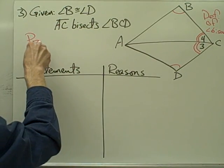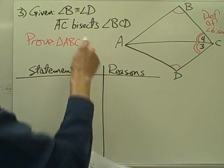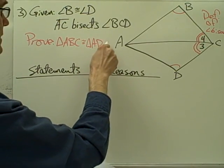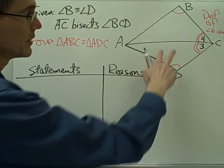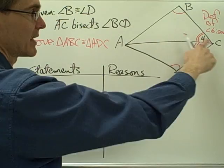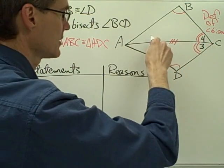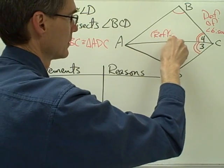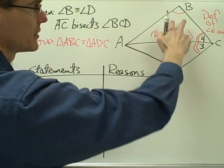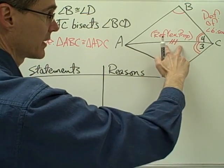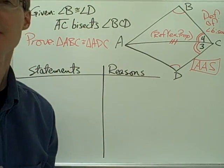This is supposed to say: prove triangle ABC is congruent to triangle ADC. I've got this angle congruent to this angle, and this angle congruent to this angle. I've got one more thing I can mark as congruent — I can use the reflexive property to say that segment AC is congruent to itself. Now I have two angles and the non-included side of this triangle congruent to two angles and the non-included side of this triangle — that's my angle-angle-side postulate.